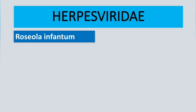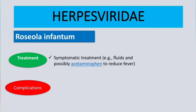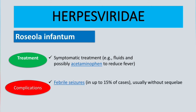To conclude, let's talk about treatment and complications of roseola infantum. Treatment is mainly symptomatic — we give fluids, and to reduce fever we can give acetaminophen. The main complication is febrile seizures, occurring in up to 15 percent of cases. The disease usually resolves with few or no complications or sequelae. Another rare complication is meningoencephalitis.